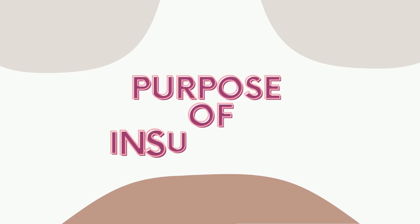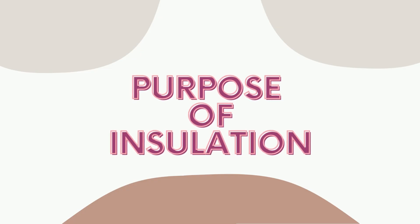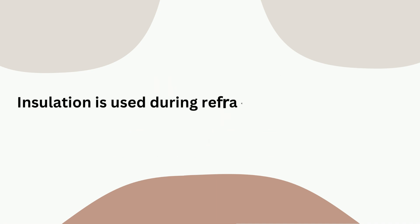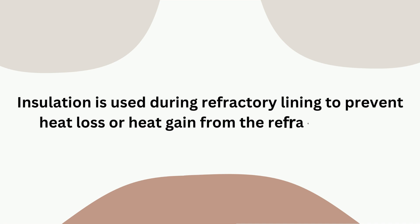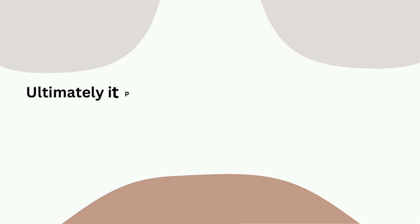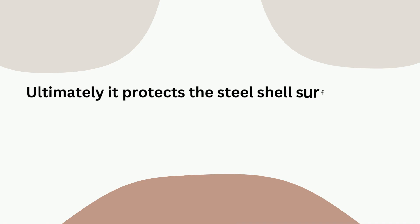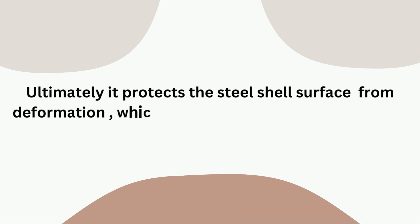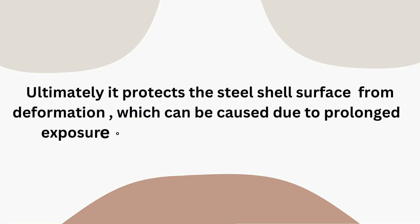Let's first discuss the purpose of insulation lining — why insulation? Insulation is used during refractory lining to prevent heat loss or heat gain from the refractory wall. Ultimately, it protects the shell surface from deformation, which can be caused due to prolonged exposure of steel to higher temperatures.